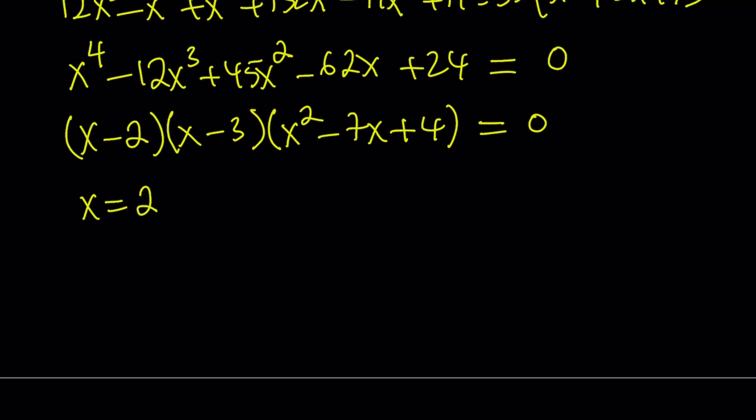So let's go ahead and write the roots from here. Obviously, x = 2 is a solution. x = 3 is a solution. And from the quadratic, we get two solutions. x = (7 ± √33)/2. So those are going to be the solutions. Since it's quartic, it has four solutions. And in this case, they all happen to be real solutions.